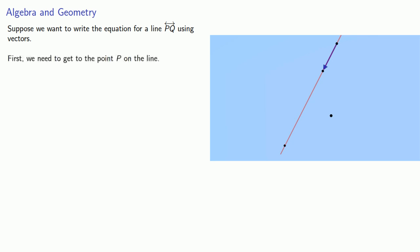First, we need to get to a point P on the line. Once we're there, we can go in the direction of the line any distance to get to another point on the line. And what this suggests is the following for the vector equation for a line.